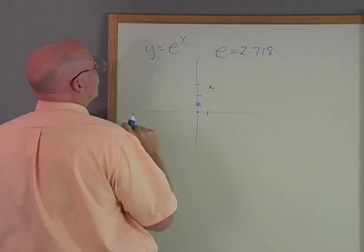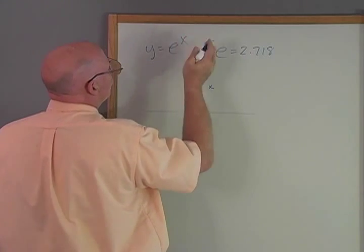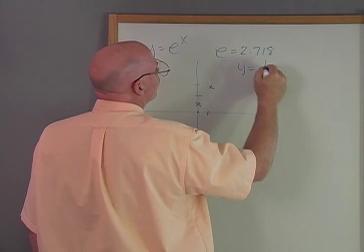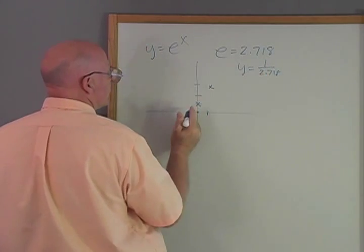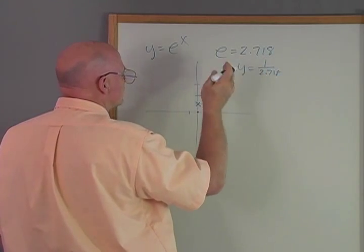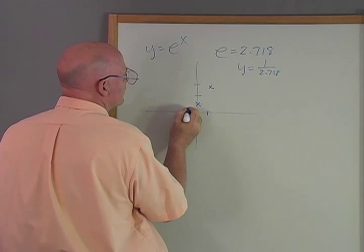If X was a negative 1, then you'd have E to the minus 1 or 1 over E, or you'd have Y equals 1 over 2.718. And that would be over here, which would be about 0.3 something or other, between 0.3 and 0.4. So here we're going to have something around like this.